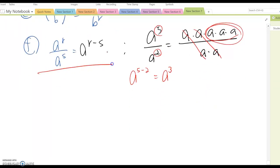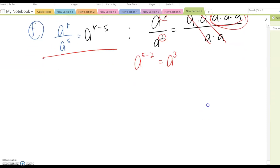But, property F, we can generate two different ways though. So, here, A to the R over A to the S. If R is bigger than S, then you just follow A to the R minus S.